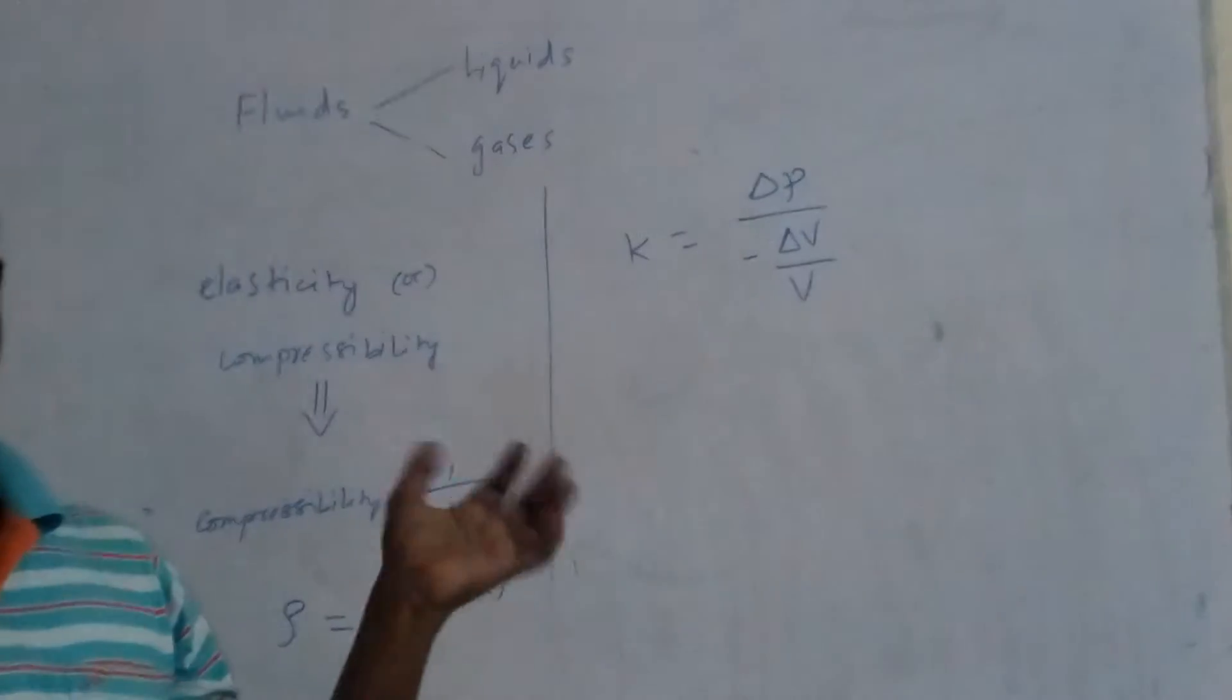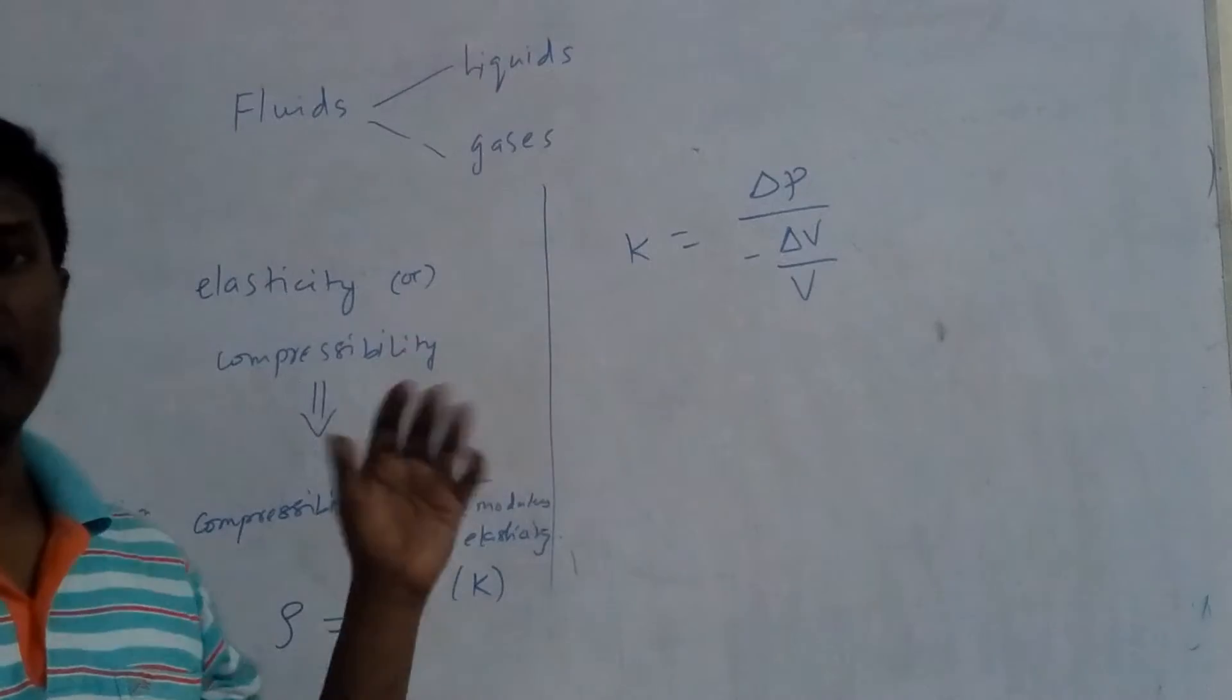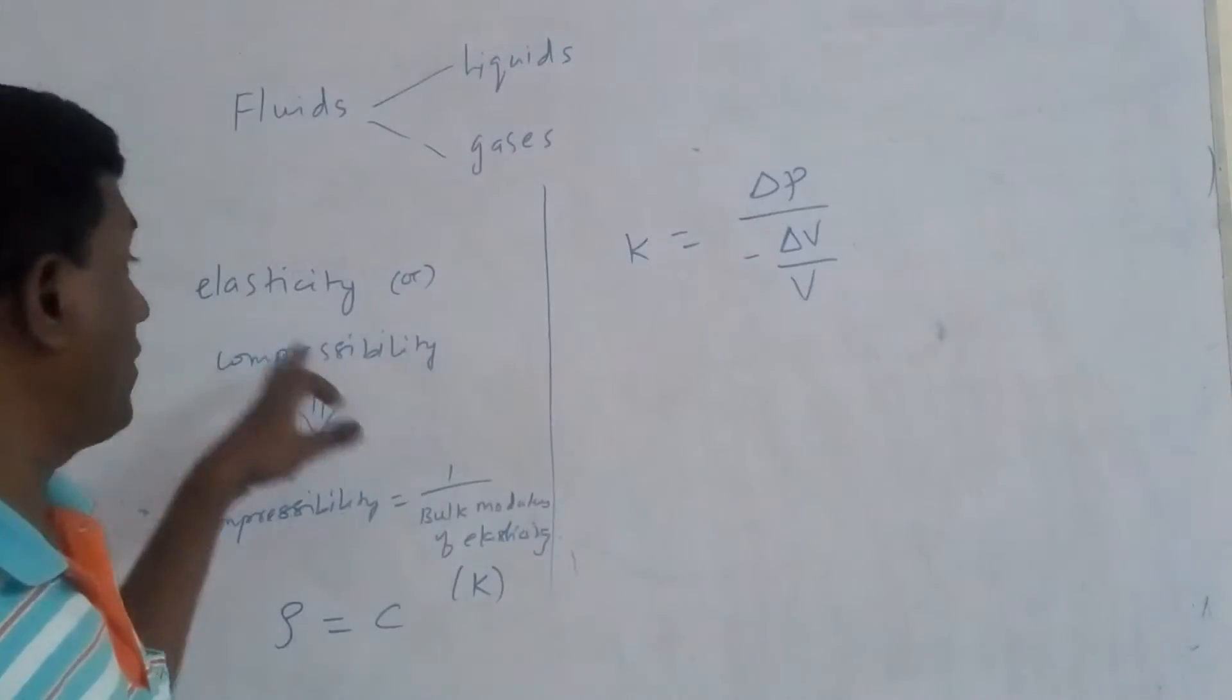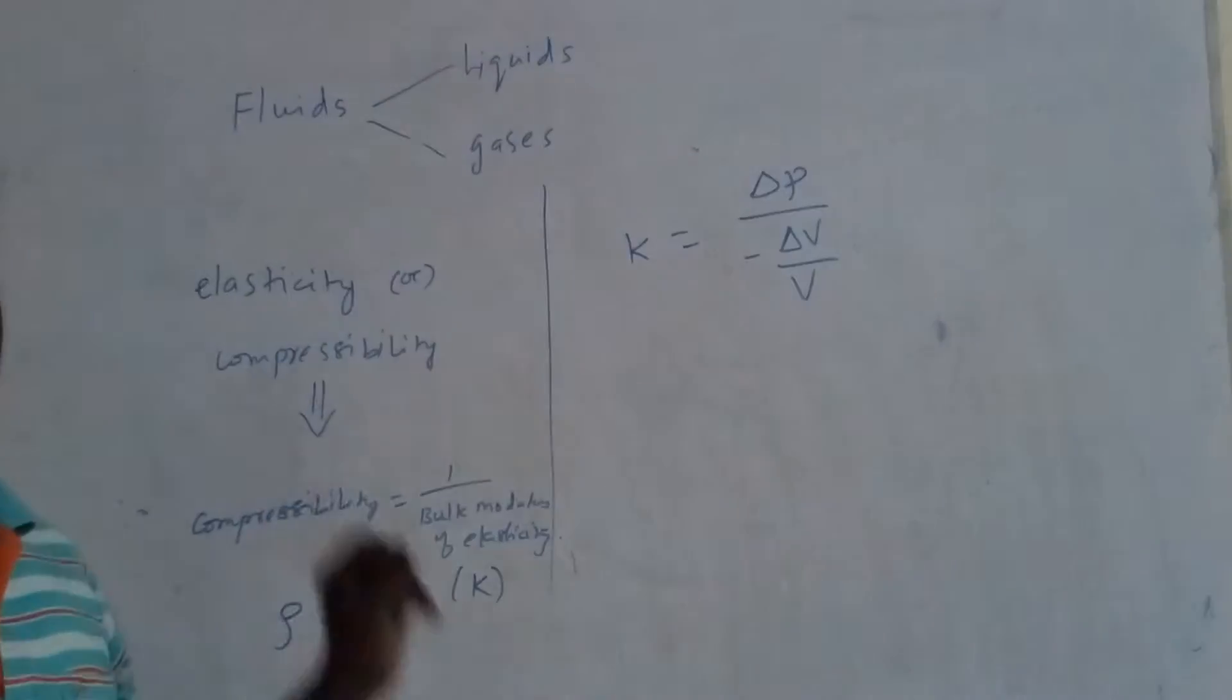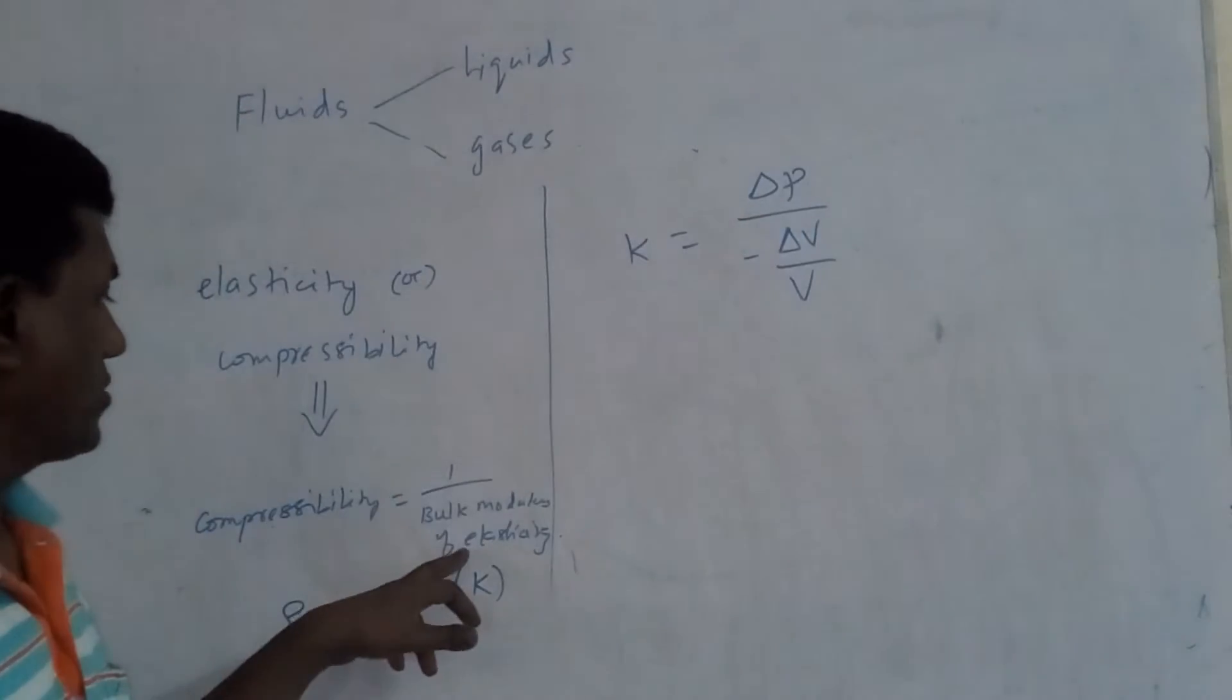From the dynamic point of view there is no much variation between the liquids and gases. But the difference exists only in the compressibility. So as we know that compressibility is defined as the inverse of the bulk modulus of the elasticity.